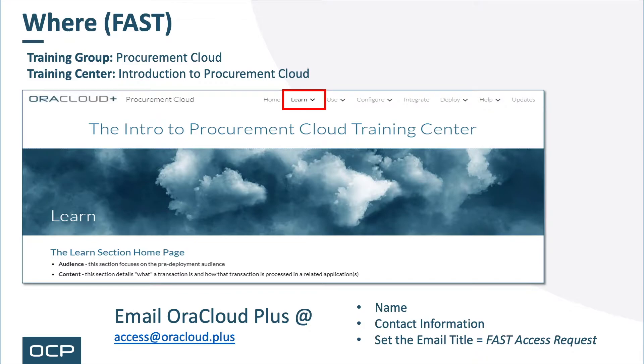To request access to FAST, email us at access@oracloud.plus. Please include your name and contact information and set the email title to FAST access request.